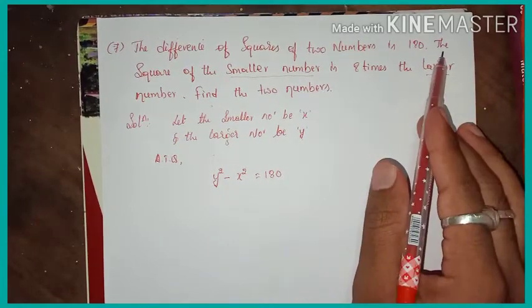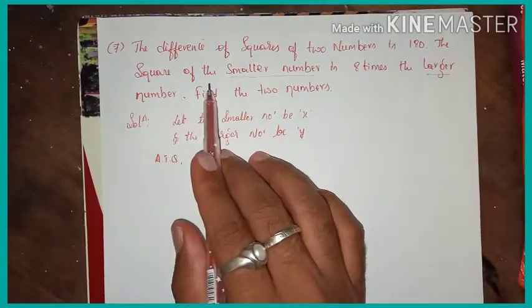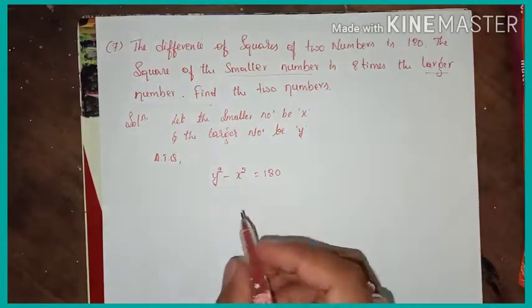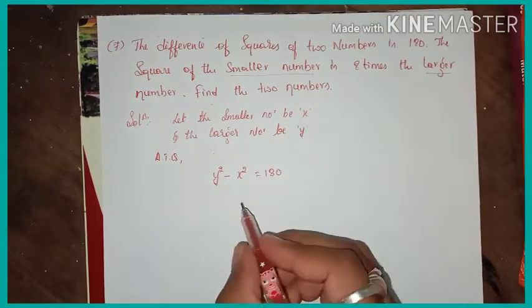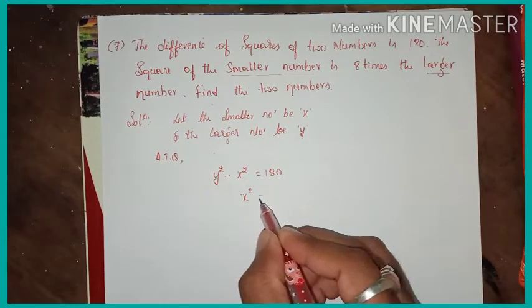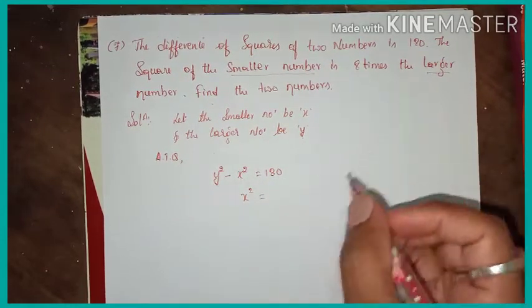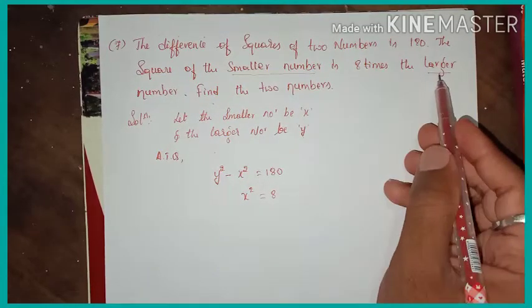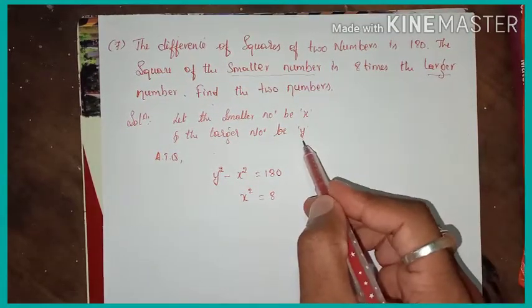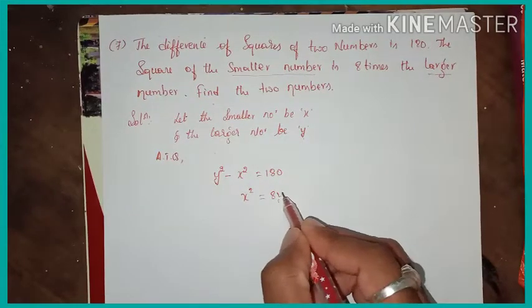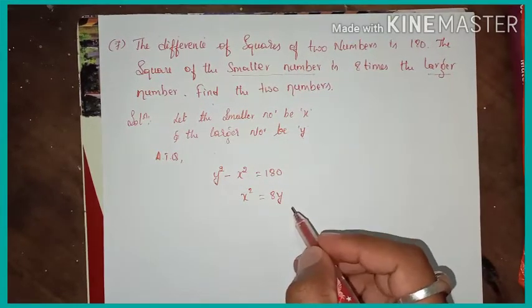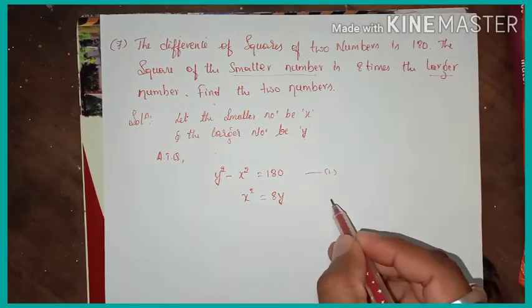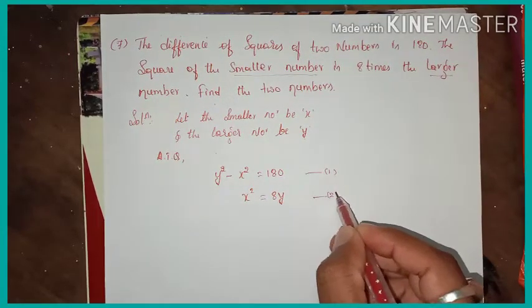Next statement: the square of the smaller number is 8 times the larger number. Since the smaller number is x and the larger number is y, we get x squared equals 8y. Let us call this equation 1 and equation 2.